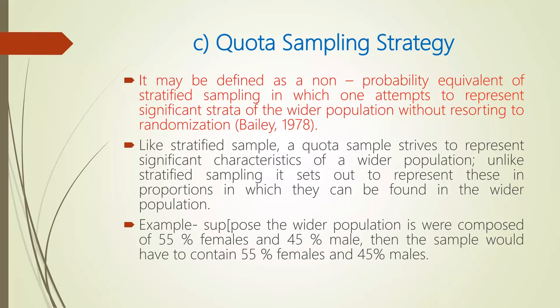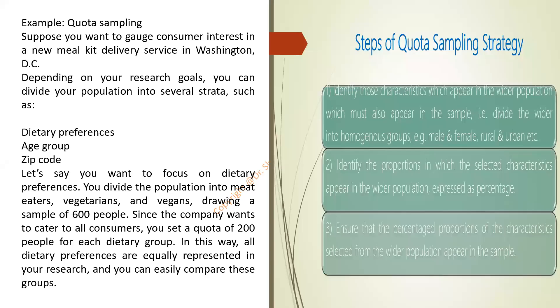What I mean is you have to keep the percentage of population as it is when you are taking the sample. For example, if the wider population has around 55% females and 45% males, then when you take a sample of 200 from a population of 1000, in that sample also you have to maintain the same proportion of male and female. That is the main speciality of quota sampling strategy.